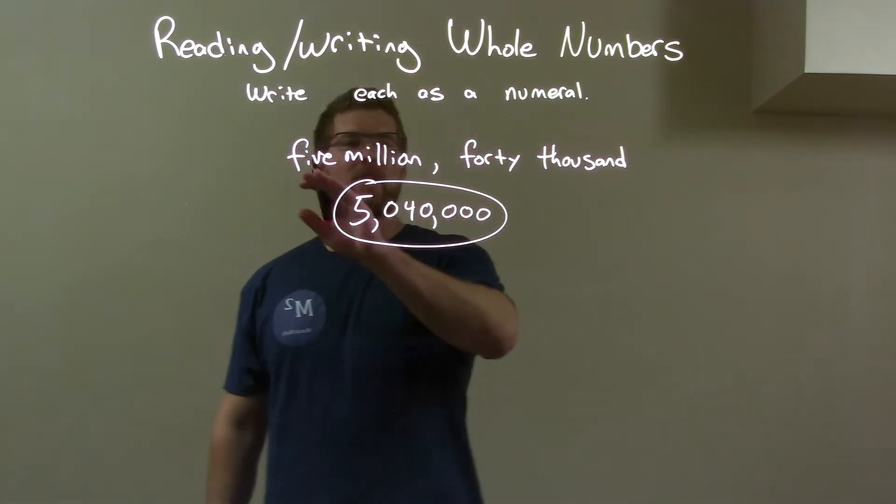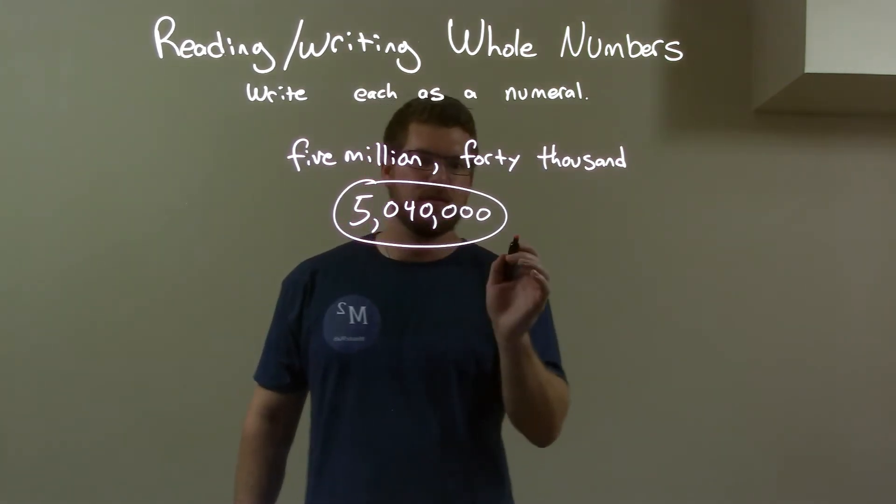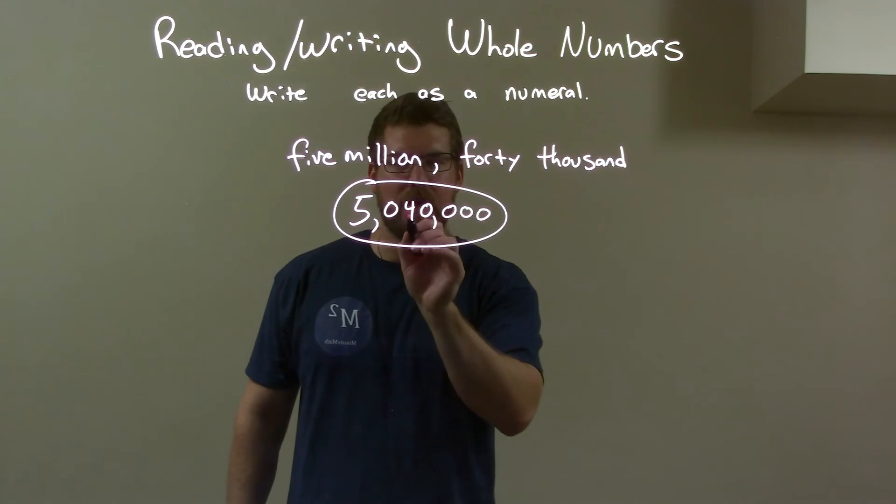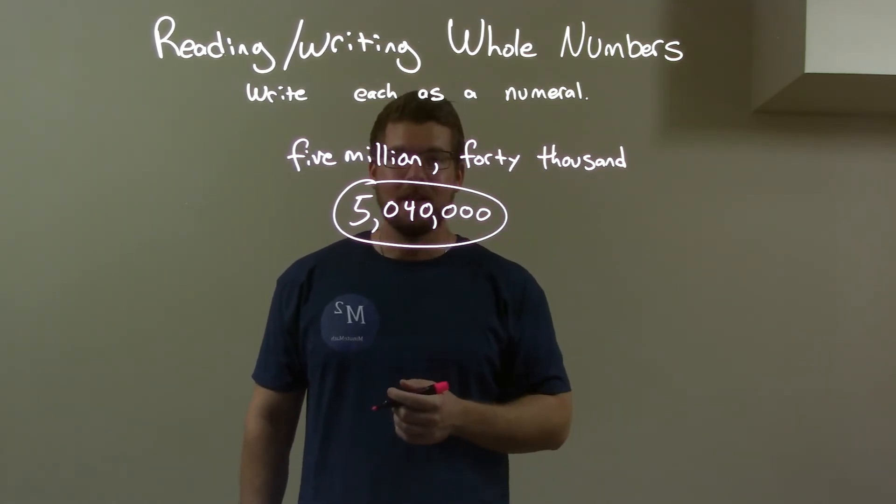So quick recap, we're given 5 million, 40,000. First part, 5 million, almost adding the zeros the rest of the way. But then we have to add the 40,000. So put the 4 right there in the ten-thousandth place. And there we have our final answer.